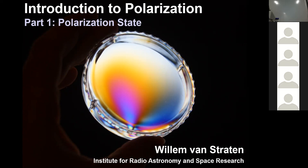This whole week we're going to be looking at polarization and different aspects of the topic, but today I'm just going to talk about polarization as a state and how we describe that state of electromagnetic radiation, how we can write it down mathematically, and how there are different parameterizations that can be chosen to describe it.